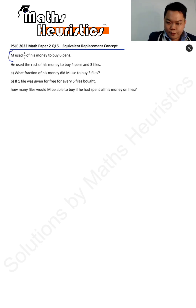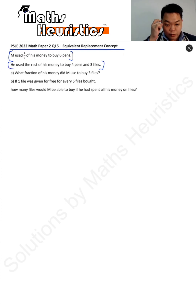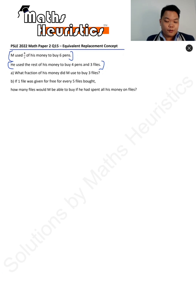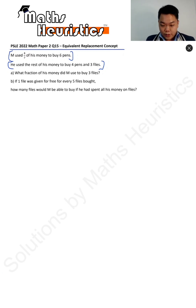M used 4/7 of his money to buy 6 pens. He used the rest of his money to buy 4 pens and 3 fouls. So what fraction of his money did M use to buy 3 fouls? And for Part B, if 1 foul was given for free for every 5 fouls bought, how many fouls would M be able to buy if he had spent all his money on fouls?